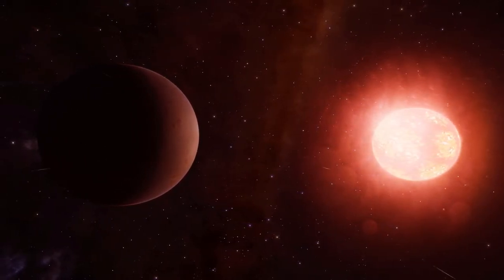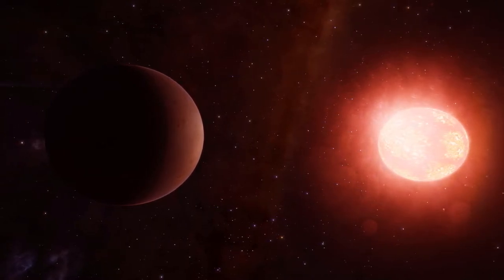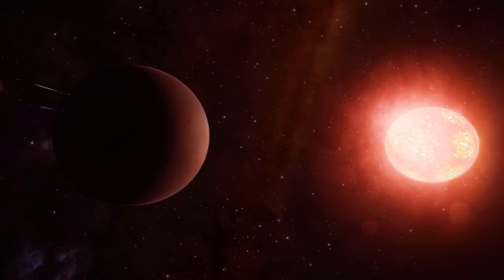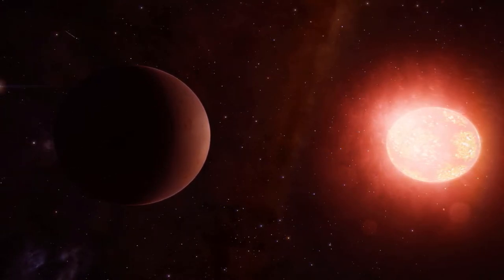What is a red dwarf? A red dwarf is the smallest and coolest kind of star in the main sequence. Red dwarfs are by far the most common type of star in the Milky Way, at least in the neighborhood of the Sun. However, because of their low luminosity, individual red dwarfs can't easily be observed. From Earth, not one that fits the stricter definitions of a red dwarf is visible to the naked eye.